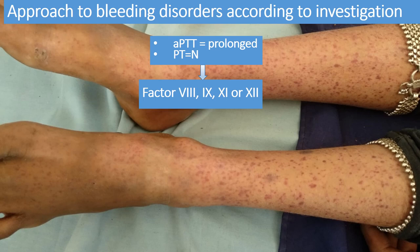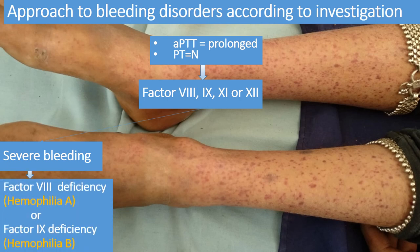If APTT is prolonged and PT is normal, the possibilities are factor 8, 9, 11, 12, or von Willebrand disease. If the child is having severe bleeding manifestations — hemarthrosis, muscle bleeding, or even cranial bleeding — especially after trauma or injury, you have to rule out factor 8 deficiency, known as hemophilia A, or factor 9 deficiency, hemophilia B, by specific clotting factor assay.